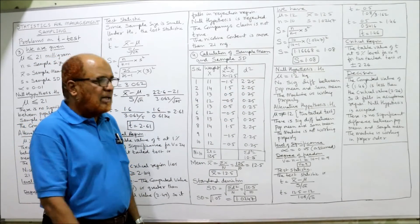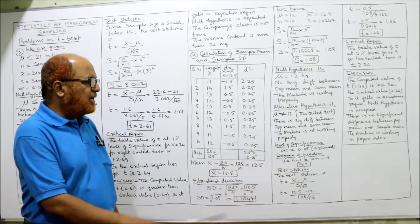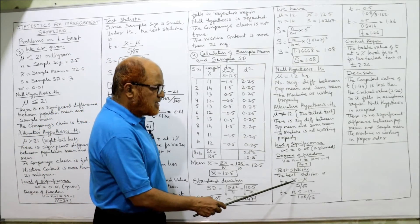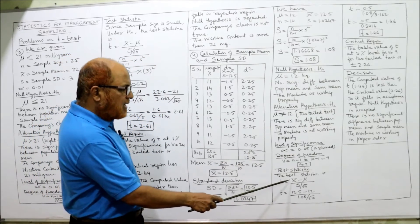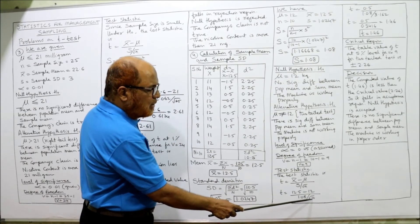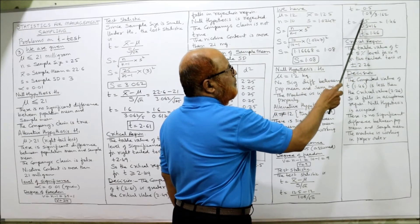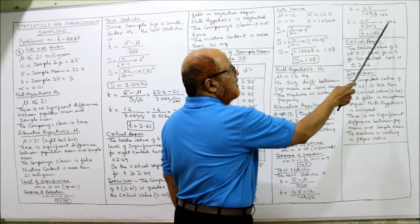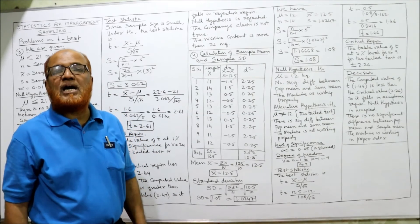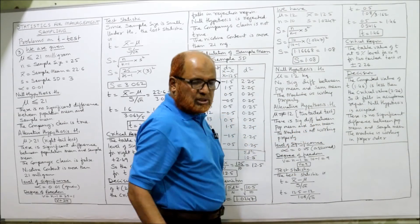The test statistic: t = (x-bar - mu) / (S / sqrt(n)) = (12.5 - 12) / (1.08 / sqrt(10)) = 0.5 / (1.08 / 3.162) = 0.5 / 0.3416 = 1.46. This computed value is compared with the critical value. From the t-table at 5% level with 9 degrees of freedom for a two-tailed test, the critical value is 2.26.